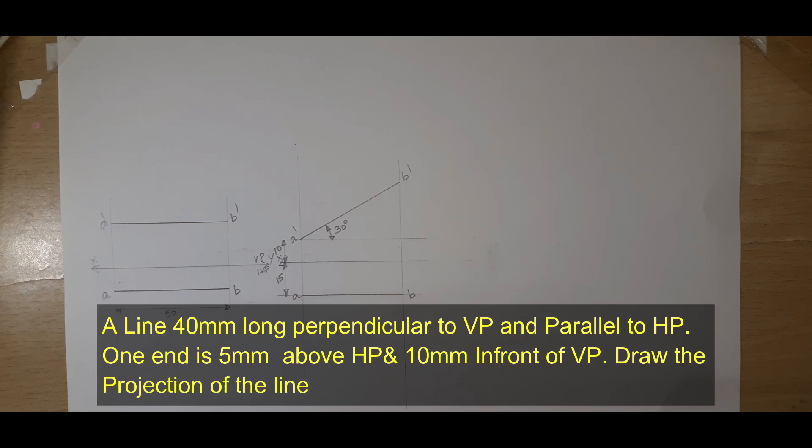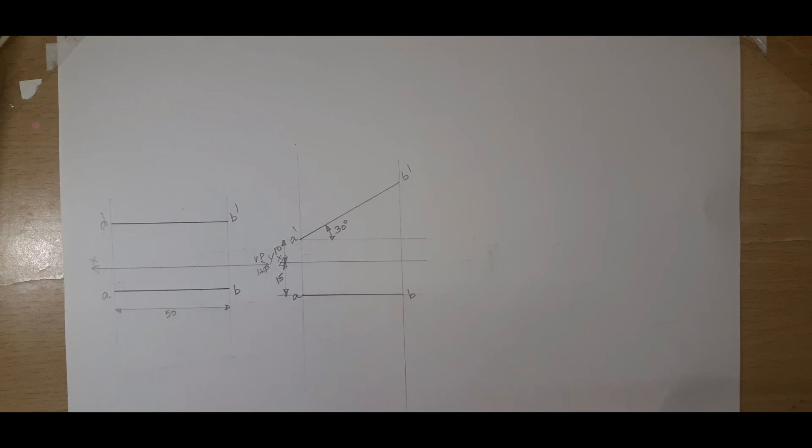The question is: A line 40mm long is perpendicular to VP and parallel to HP, and one end of the line is 10mm in front of VP and 5mm above HP.